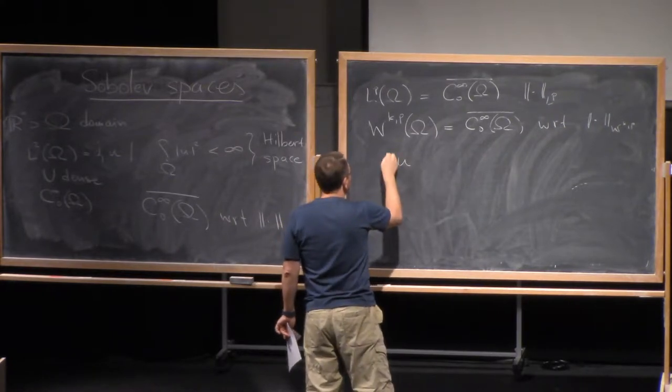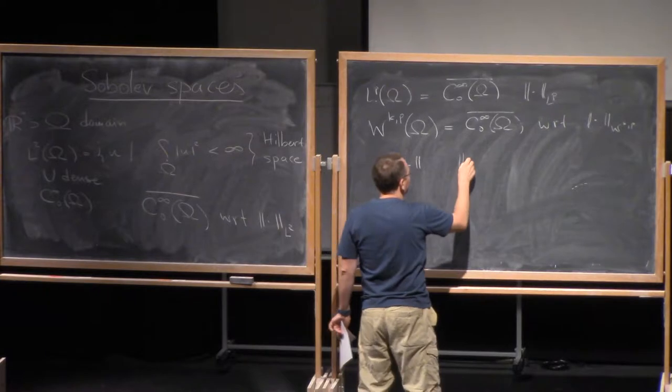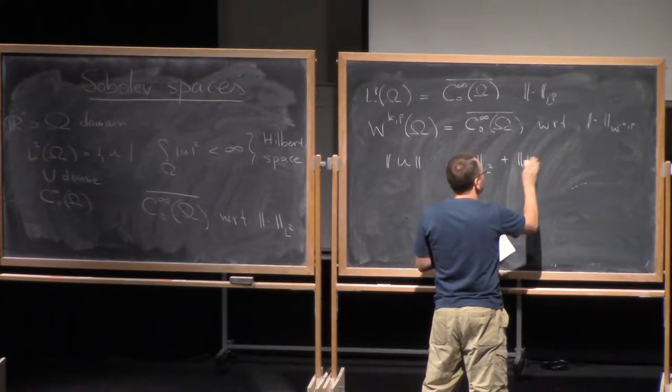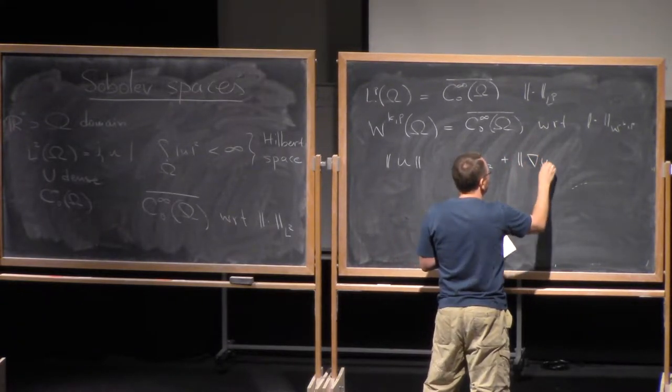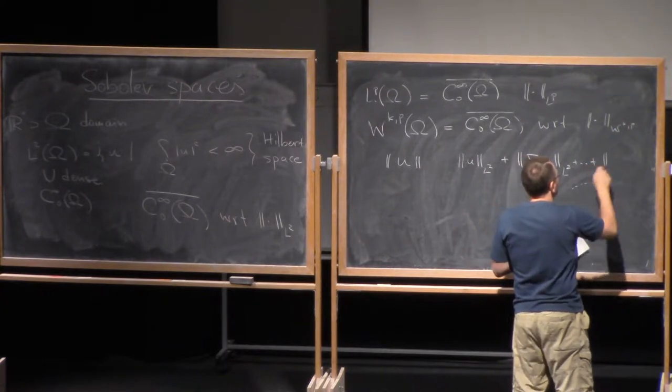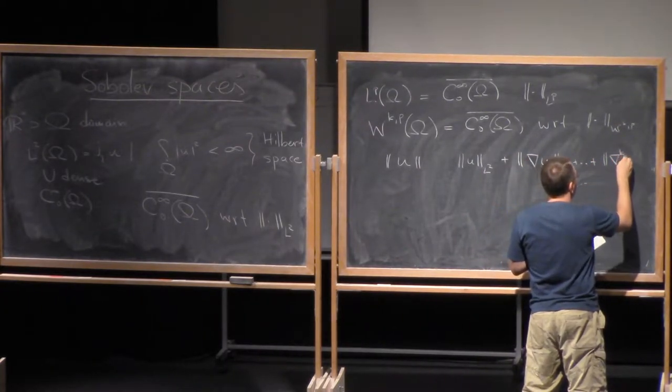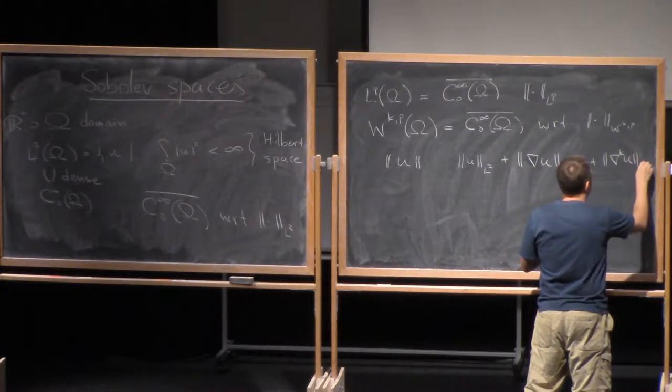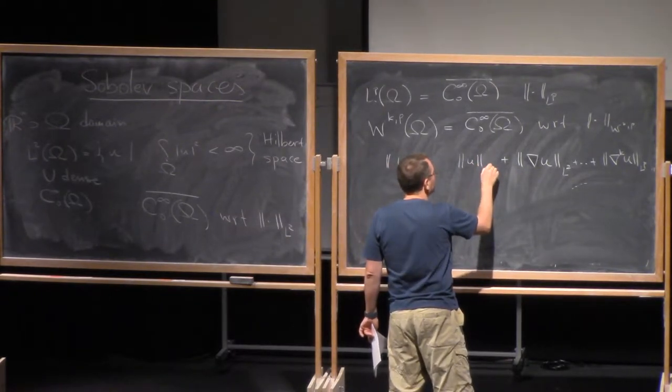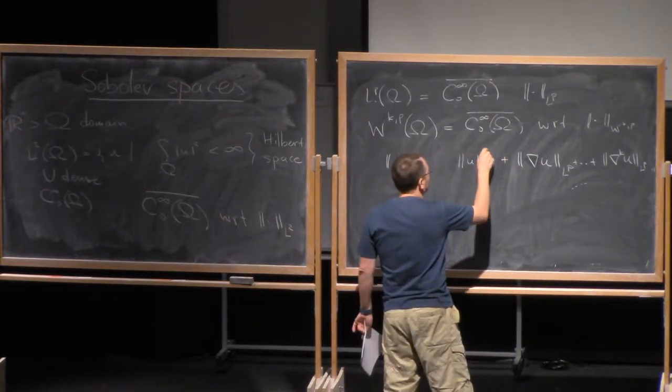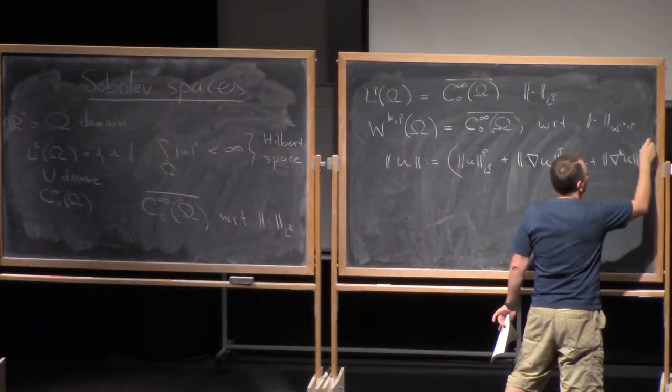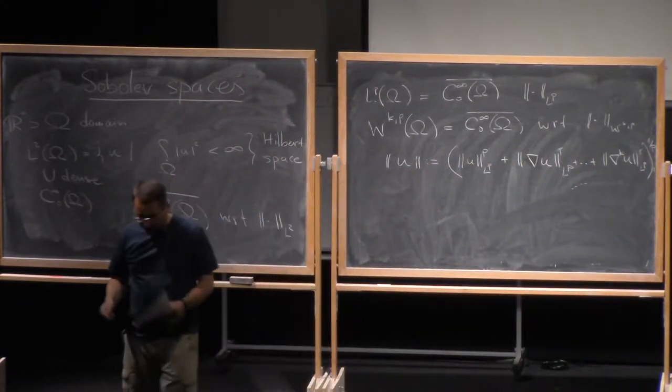If I have a smooth function U, I can take its L^p norm. I can take its derivative, say nabla U, I can also take the L^p norm of this, and so on, till I take all k derivatives of U in the L^p norm. Well, sometimes, so this norm would be okay, but sometimes, so I want to take L^p norm to the power p, and then the p's root of this is sometimes better behaved.